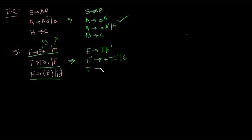T gives F T prime. T prime gives star F T prime and epsilon. Now we have eliminated left recursion. Now we have eliminated left recursion from this production as well. There is no left recursion in this production.